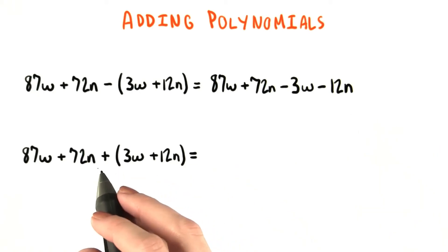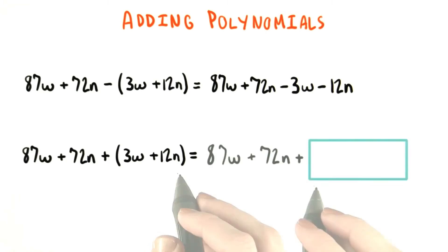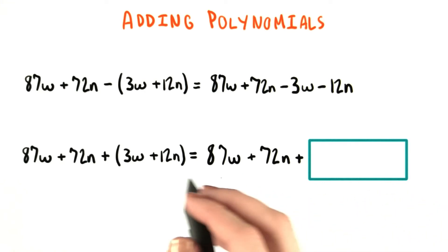What if instead, though, we decided to add them? So you want to add this entire quantity that's inside the parentheses. So here's a little quiz. What terms would you put in this green box right here to correctly complete this expression over here?